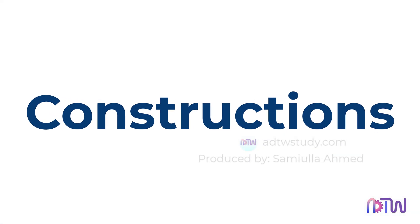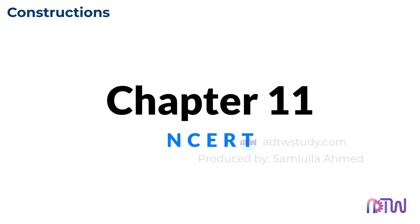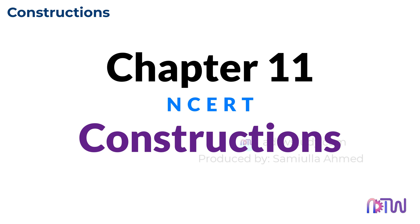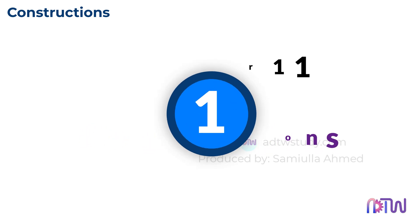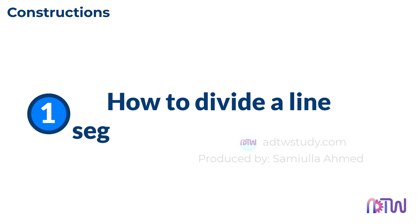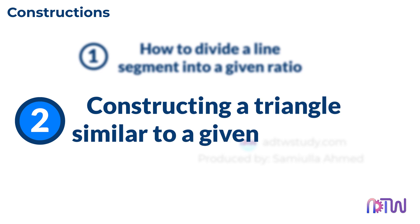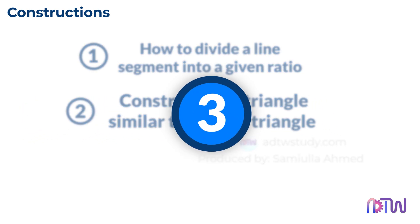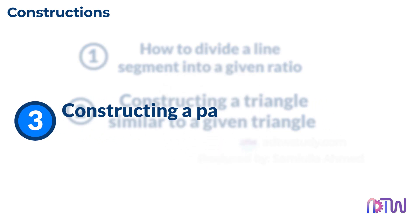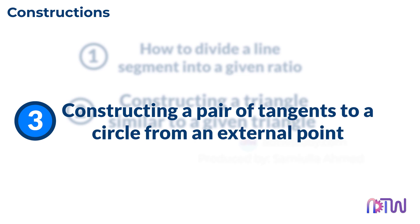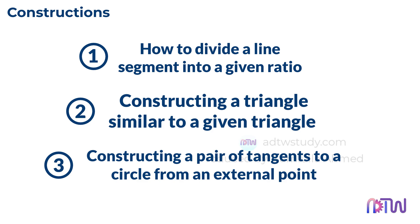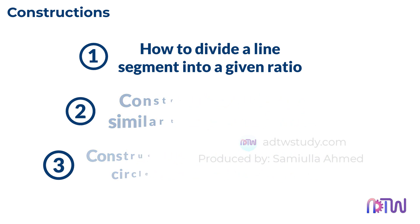Constructions. Hello everyone, in today's video we'll dive into Chapter 11 from the NCERT syllabus titled Constructions. This chapter focuses on three main topics: one, how to divide a line segment into a given ratio; two, constructing a triangle similar to a given triangle based on a specified scale factor; and three, constructing a pair of tangents to a circle from an external point. We'll break down each of these topics in detail, working through all the exercise questions step by step. Let's start with the first topic of this chapter.